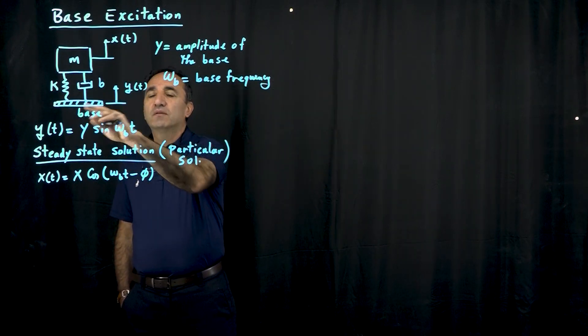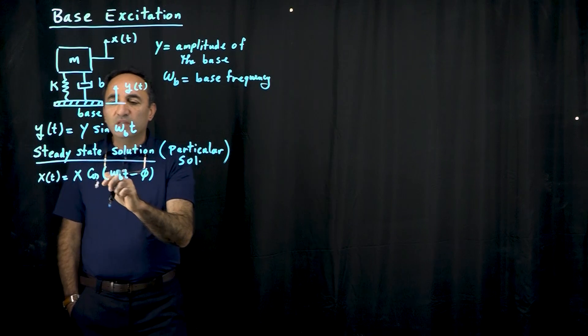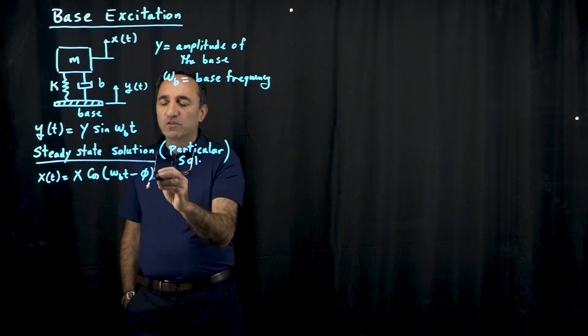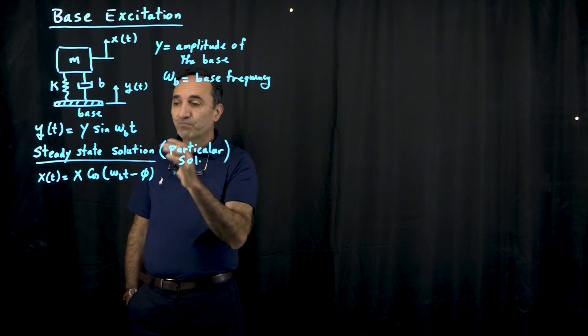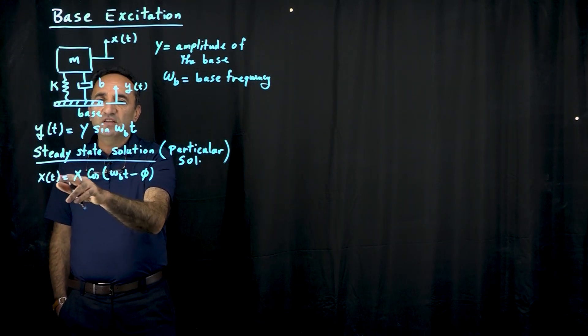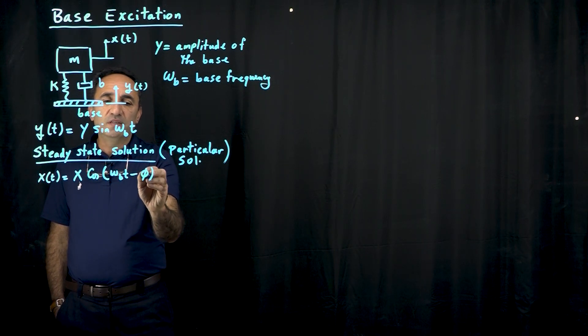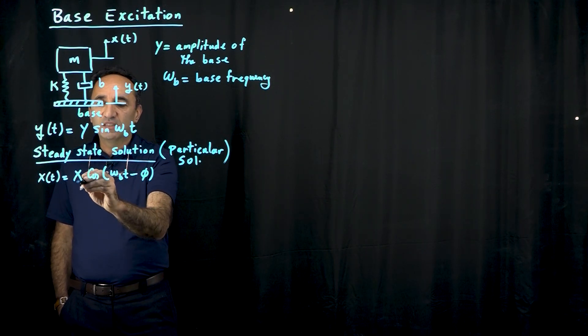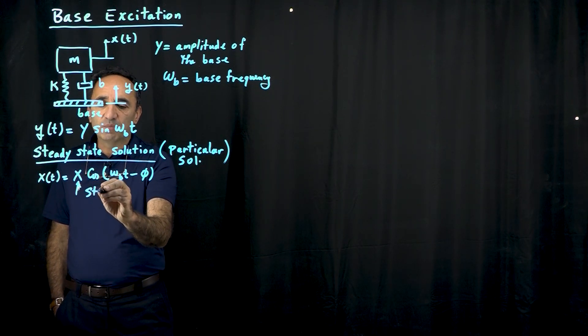And actually y dot and x dot. But instead I'm going to actually concentrate on the solution bypassing a lot of the derivation. So here we're going to say the steady state solution is equal to x cosine omega bt minus phi. So we assume the solution like that. What is important to us is this amplitude. That's called the steady state amplitude.